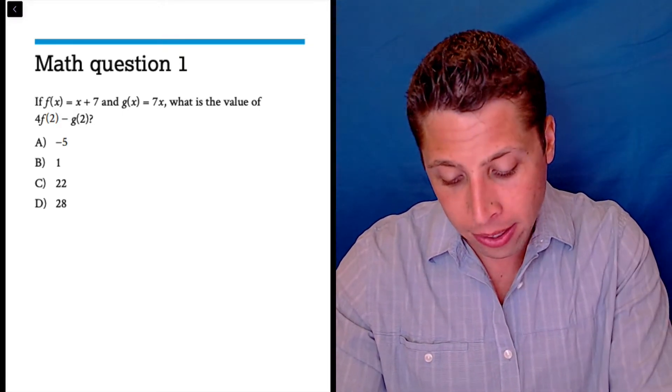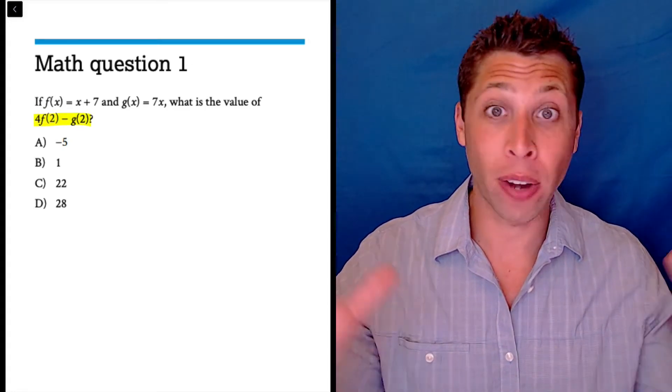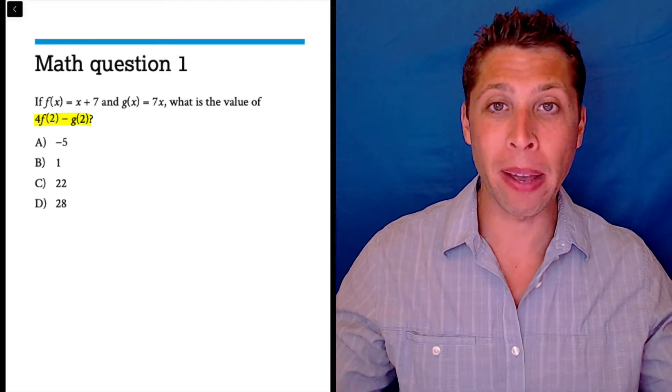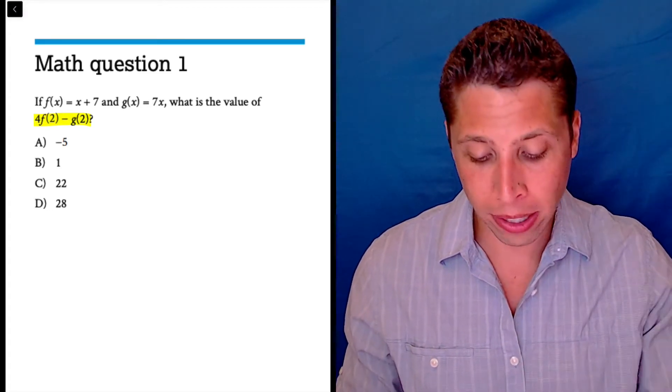So we need to treat this thing as an instruction. Now, the mistake that a lot of people make is they try to do it all at once. They think very algebraically about things and they're going to just plug everything in all at once. Just take it one step at a time. Where is step one?